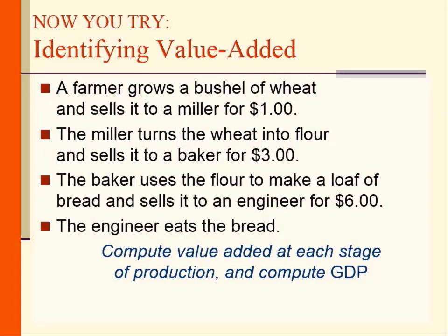Let's try this question on value added. At first stage, a farmer grows a bushel of wheat and sells it to a miller for $1. Second stage, the miller turns the wheat into flour and sells it to a baker for $3. Third stage, the baker uses the flour to make a loaf of bread and sells it to an engineer for $6. At the first stage, the farmer's value added is $1 — the price of the wheat the farmer sells.